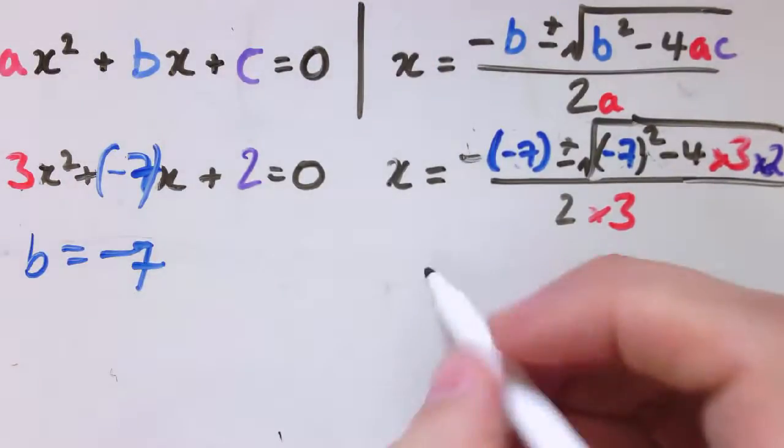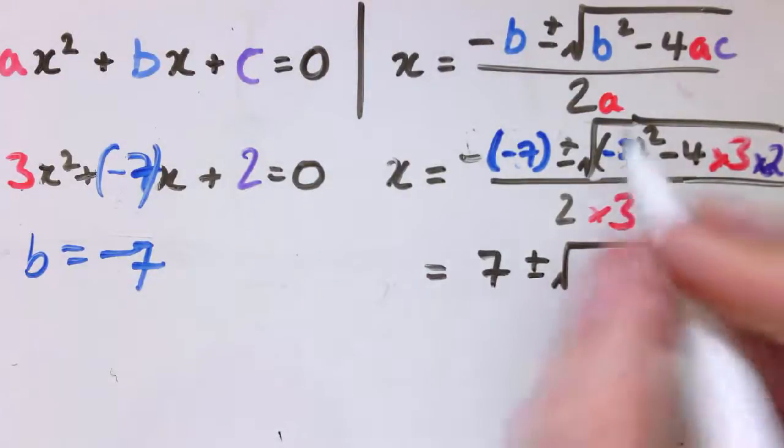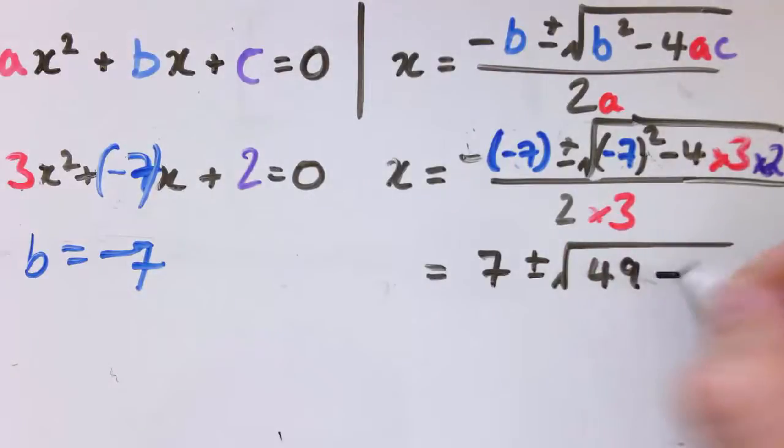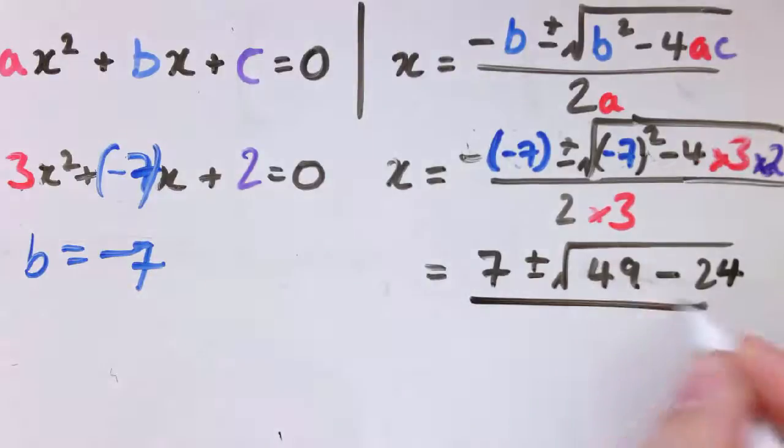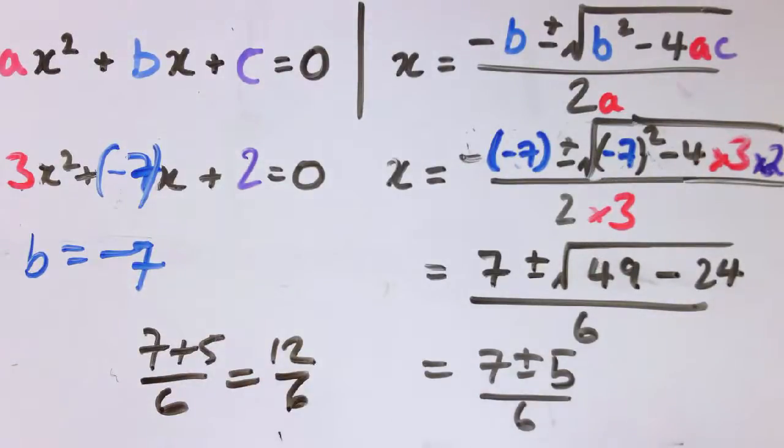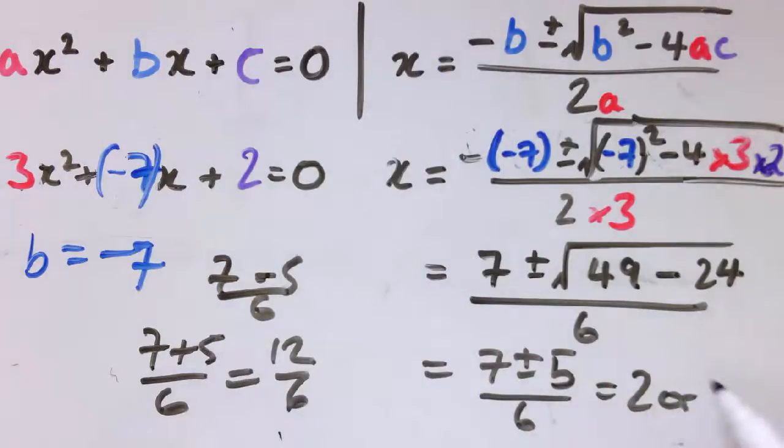So this is the knock-on effect of the formula. So instead of putting in 7, I put minus 7. So I get minus minus 7, which is plus 7, plus or minus the square root of minus 7 squared. It's the whole of b all squared, so it's minus 7 squared. So that's still plus 49, it's not minus 49. And minus 4 times 3 times 2, that's still minus 24. And on the bottom here, I've still got 6. And it's 7 plus or minus 5 over 6. So either 7 plus 5 over 6, which is 12 over 6, which is 2, or 7 minus 5 over 6, which is 2 over 6, which is 1 third. So x is 2 or 1 third.